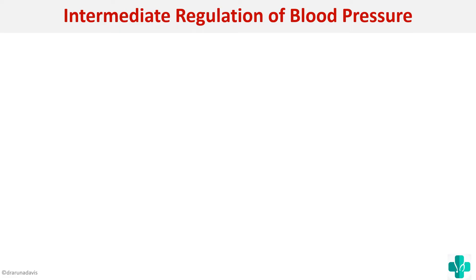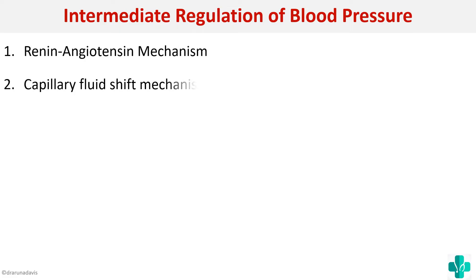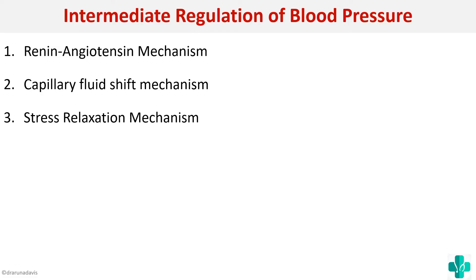There are three basic mechanisms under intermediate regulation: the first is the renin-angiotensin mechanism, the second is the capillary fluid shift mechanism, and the third is the stress relaxation mechanism. We will see each one by one.